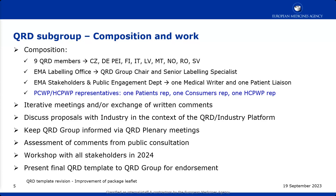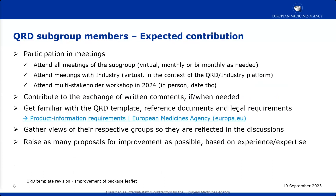What is expected from subgroup members: attendance at all meetings, which we think will be monthly or every six to seven weeks as needed, held virtually via Teams. We will also have virtual meetings with industry, roughly three or four per year in the context of our platform. We intend to hold the stakeholder workshop in person at the agency, hopefully next year, with the date to be confirmed.